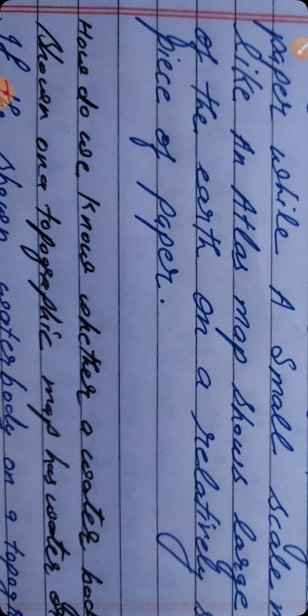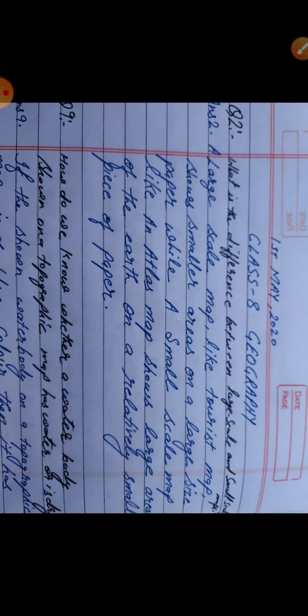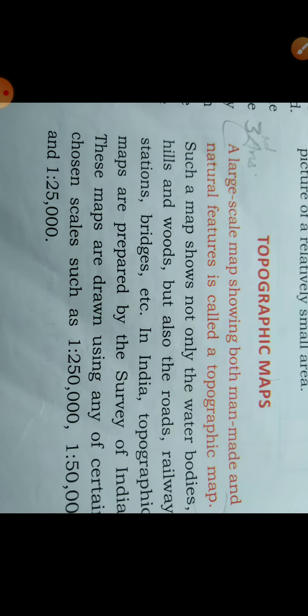The third question is: What is a topographic map? The topographic map is given on page number one, second column, marked with red lines. A large scale map showing both man-made and natural features is called a topographic map. Up to this much only you have to write. This is your third answer.